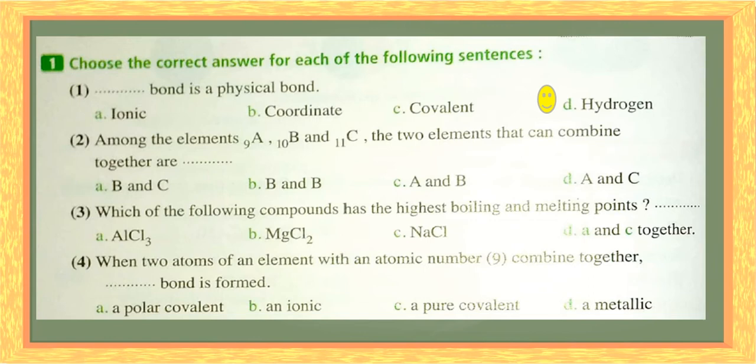Element C has configuration two, eight, one — it is a metal that has only one electron, also monovalent. So C is a metal and A is a non-metal. They will form a bond together, and it will be an ionic bond. So the two elements that will combine together will be A and C. This is the right answer.